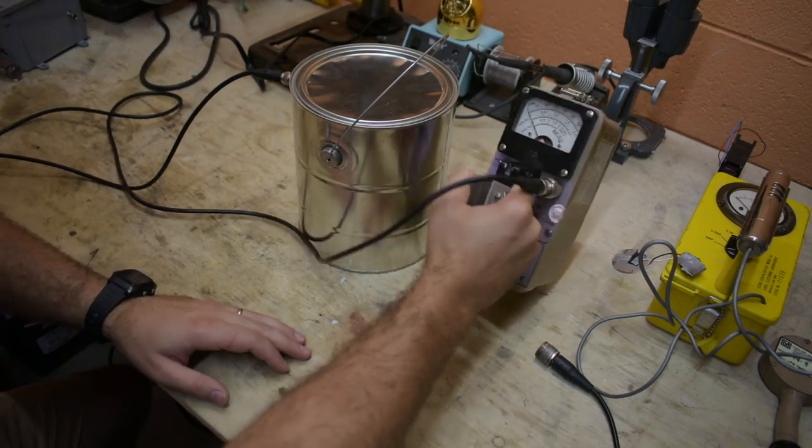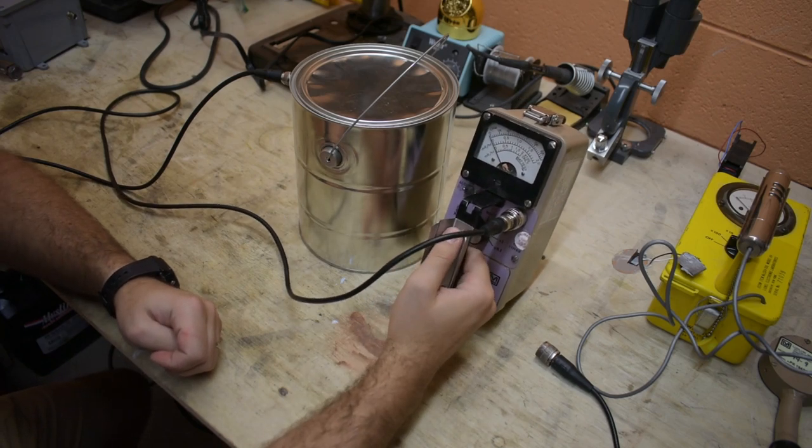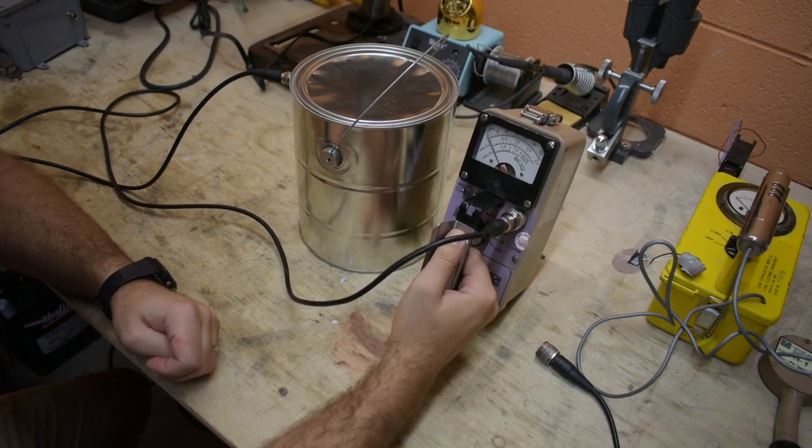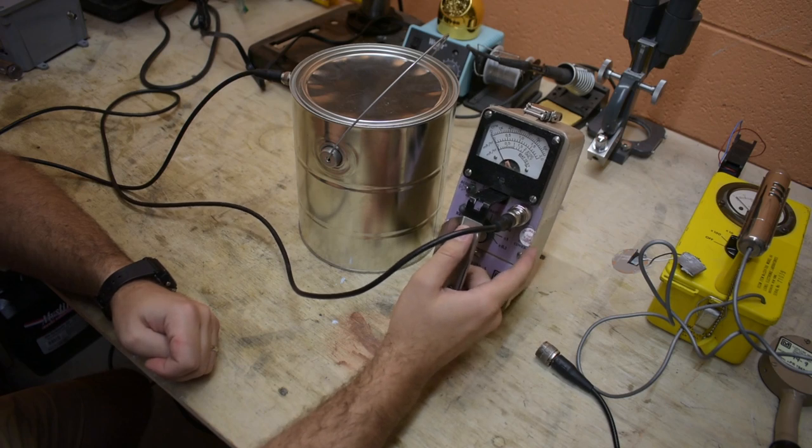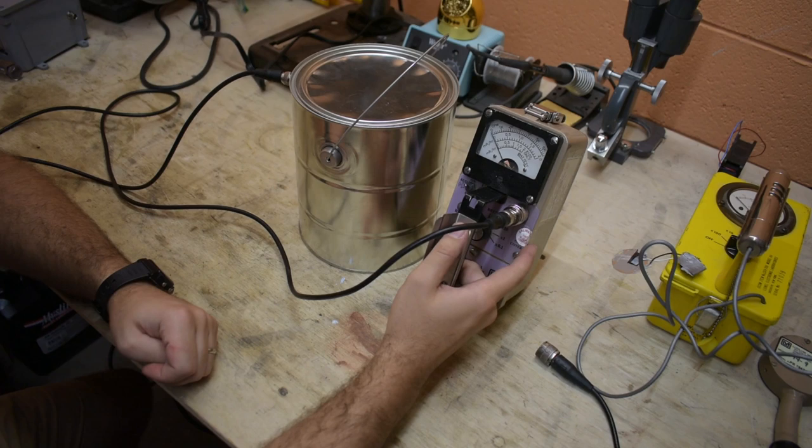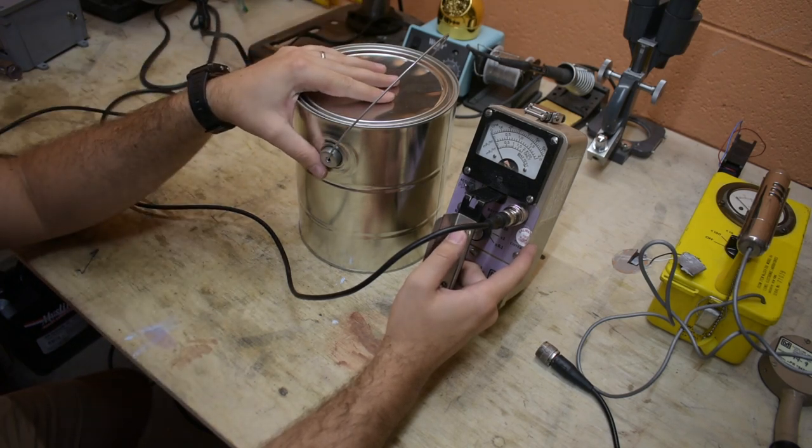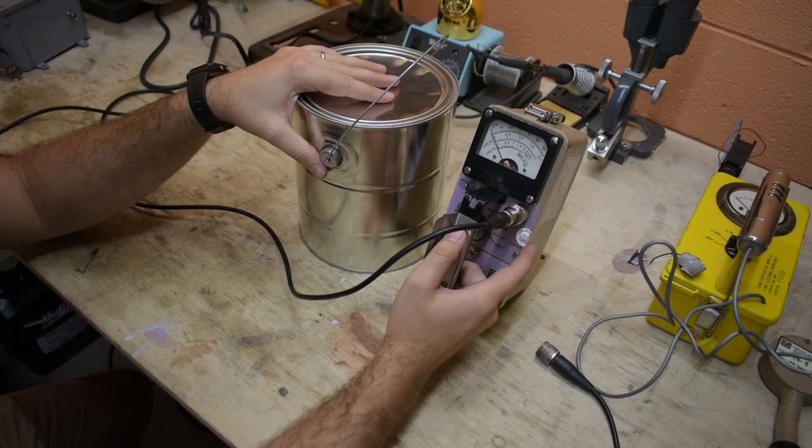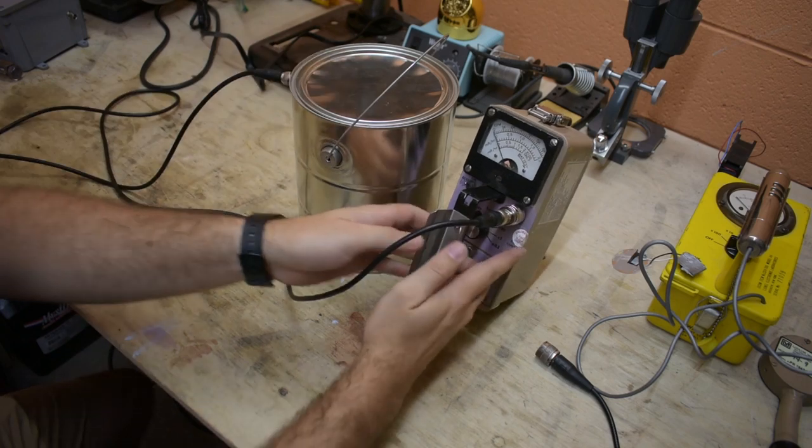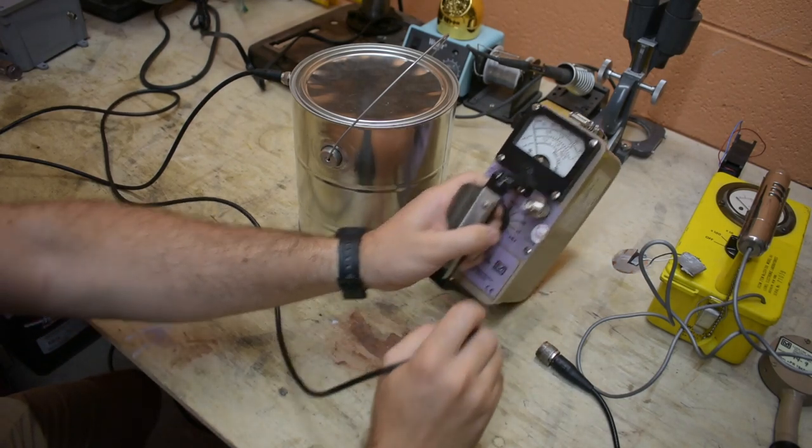So the number of clicks you measure determines the accuracy of your radiation measurement. So with a Geiger tube, if you want to detect a very small change in radiation levels, you have to average over a long period of time so that you can get enough pulses built up. Whereas with this, normally within just a few seconds you can get enough pulses to get an accurate radiation measurement and see very small changes in radiation levels.